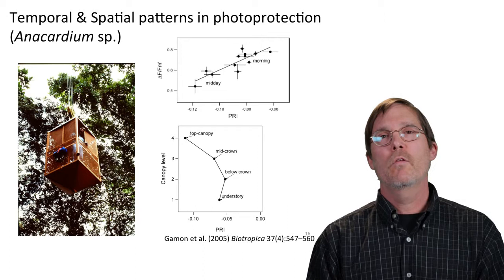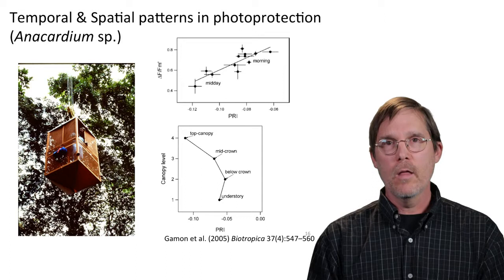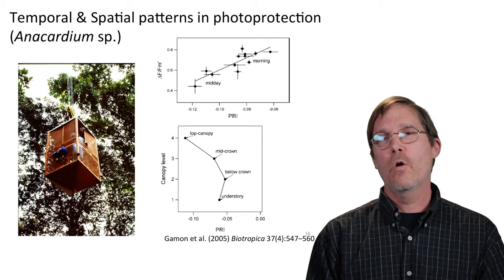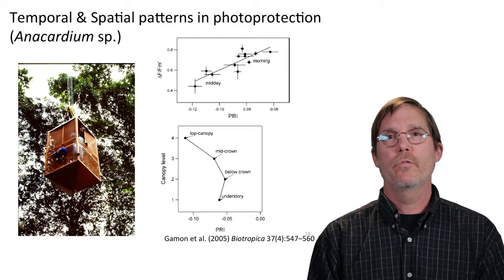The results show a very distinct gradient in PRI with light level at different canopy levels. The top of the canopy, with high light exposure at midday, has a very reduced PRI indicating stress conditions, while going down into the canopy you see much higher PRI levels in the shaded regions.